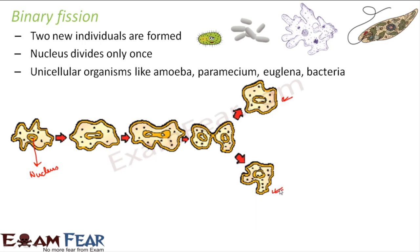In amoeba, the splitting happens along any plane — there is no specific plane along which it is split. An important thing to notice is that once fission has happened, the parent no longer exists, because the parent itself broke into two parts. So the parent finishes after fission. The nucleus divided just once, which is why it is said that the nucleus divides only once. This kind of fission happens under favorable conditions.